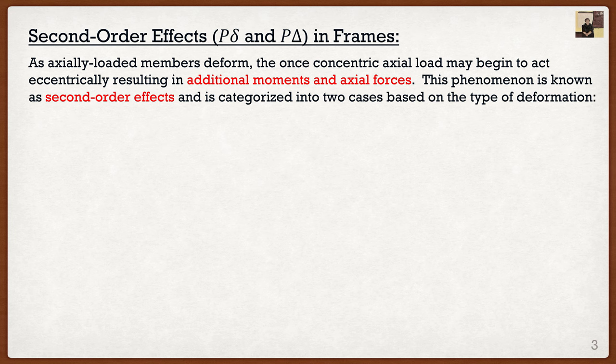Looking at the title, it's interesting because we have two different types: p-delta and p-delta. It's very confusing right off the bat because they're both labeled p-delta. What you'll typically hear people say is p-small-delta as well as p-big-delta. This effect occurs in axially loaded members as they deform — if something is under axial load, that axial load typically acts directly through the member. However as the member starts to deform or bend, that axial load starts to act at an eccentricity, creating additional moments and axial forces. This is known as second order effects, categorized into either p-big-delta or p-small-delta.